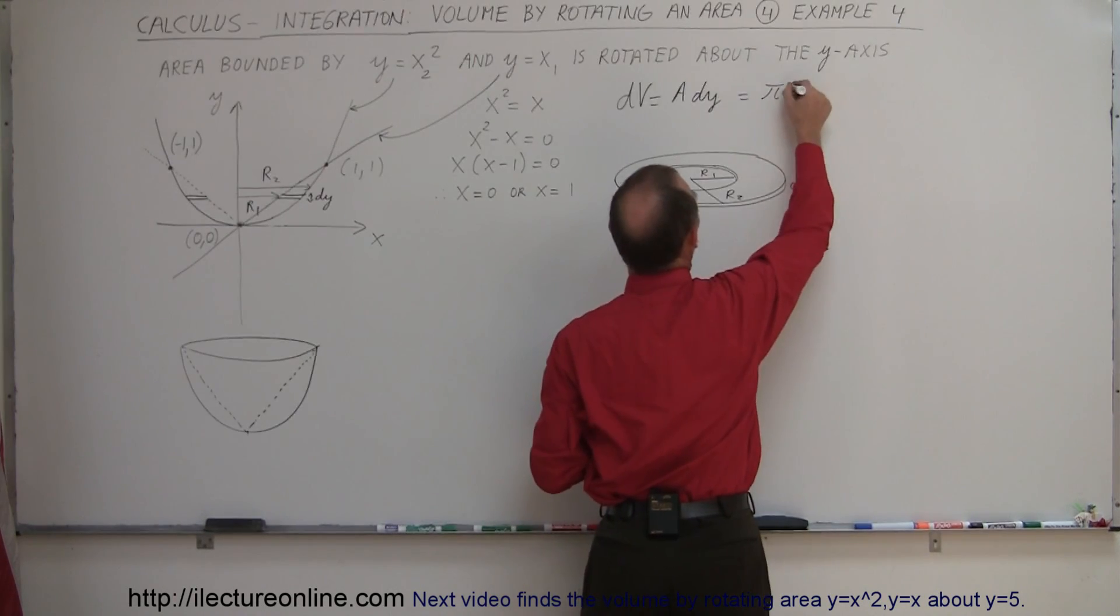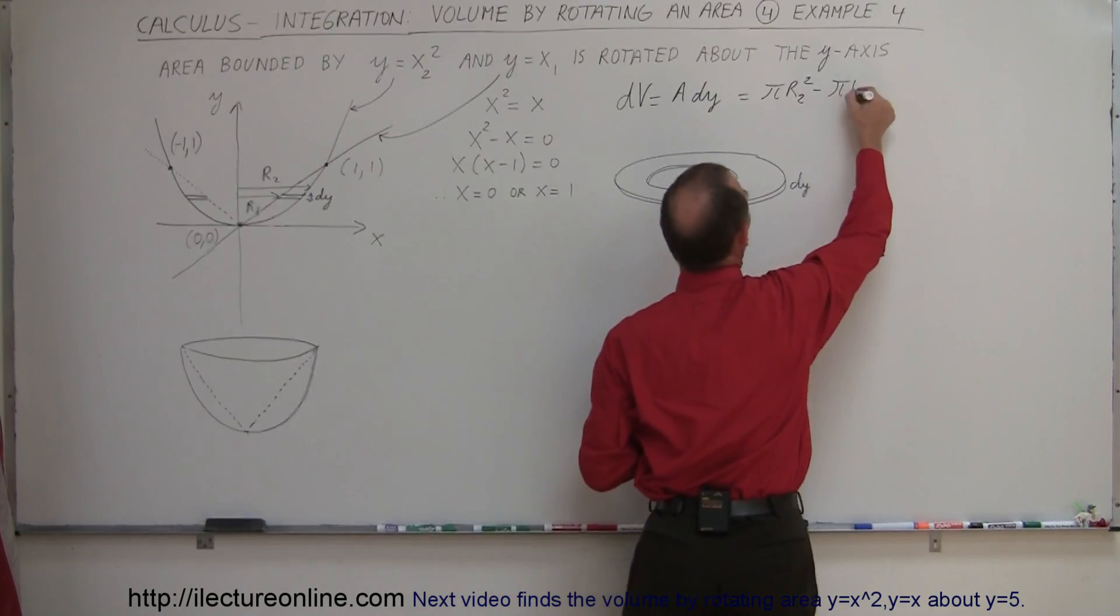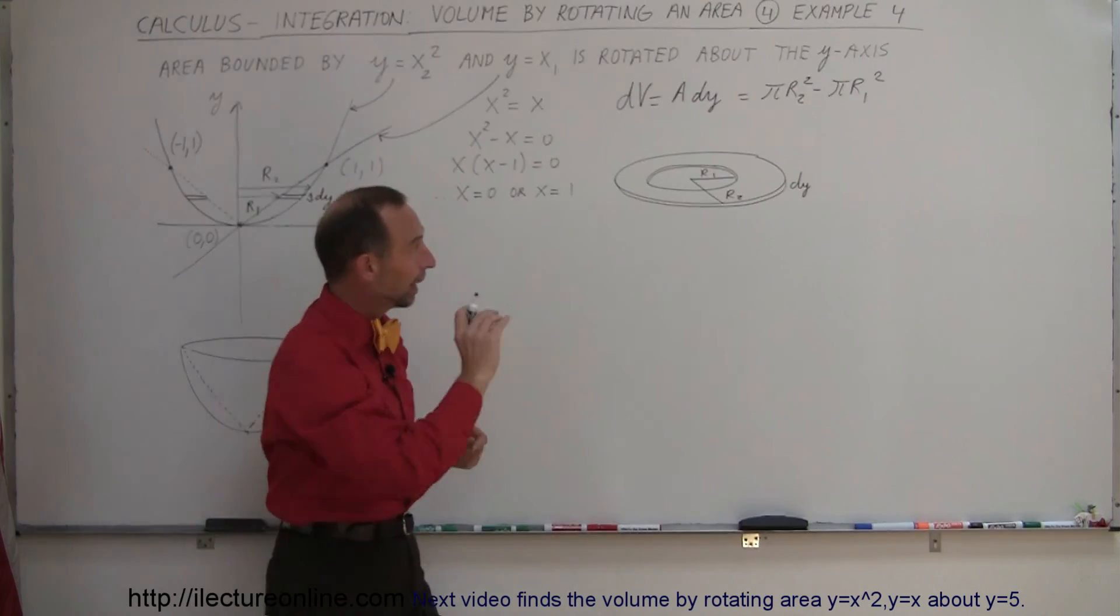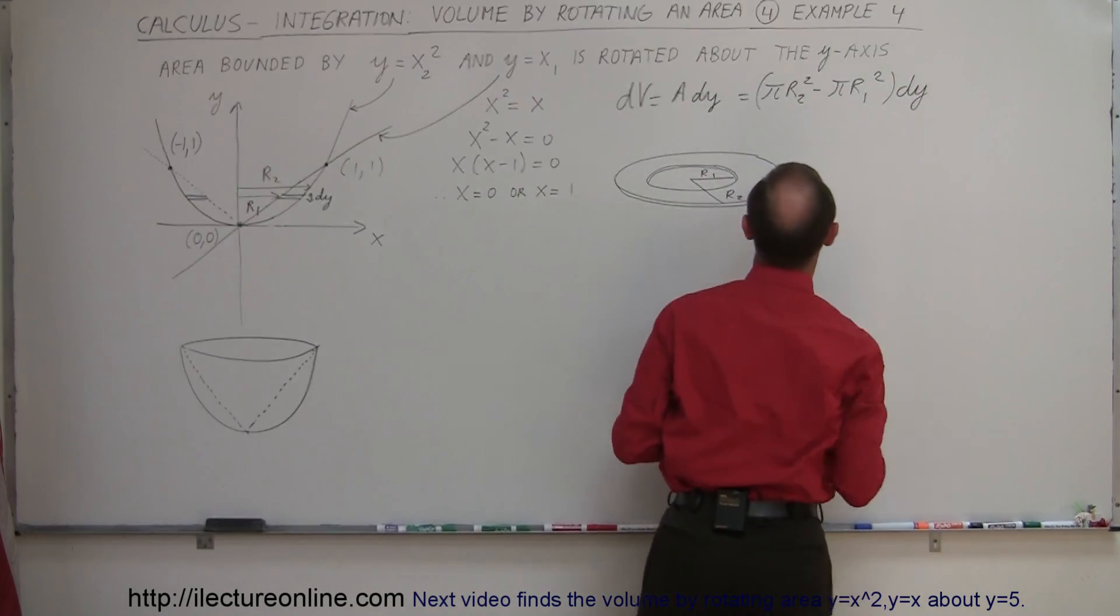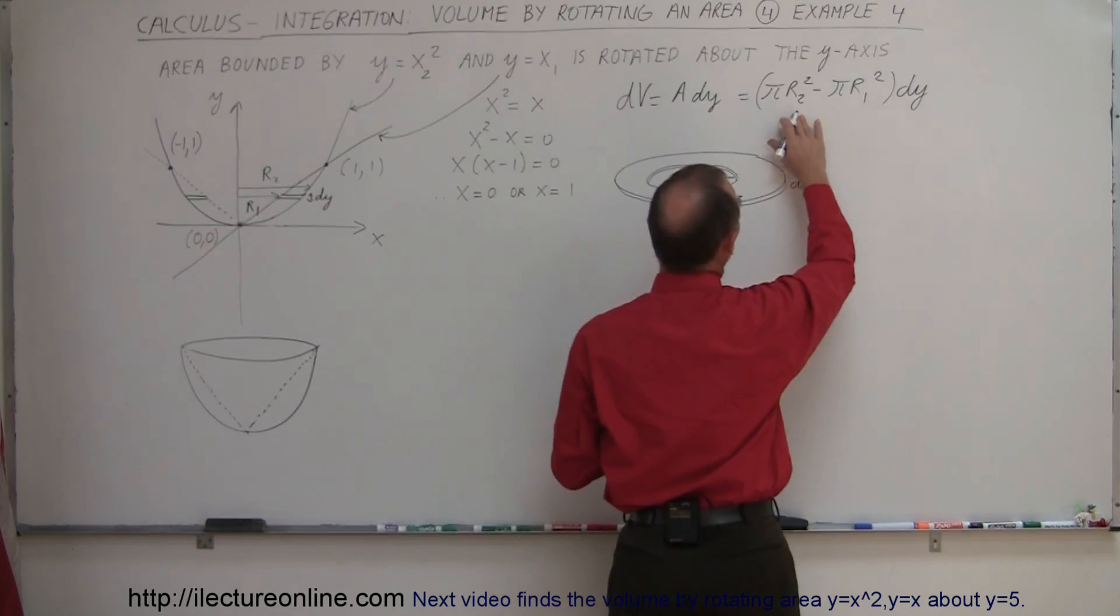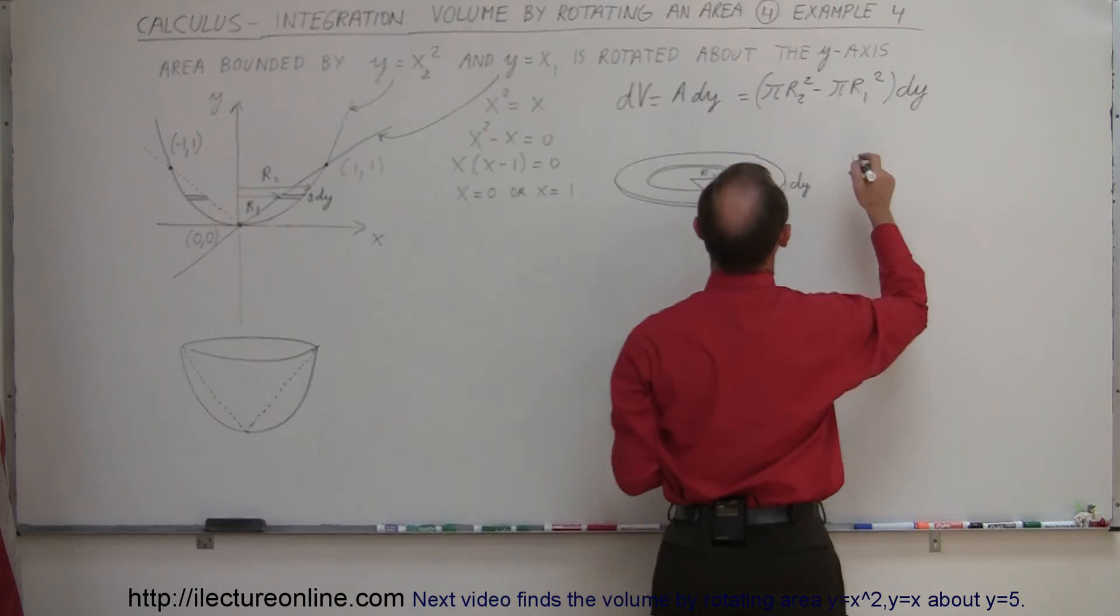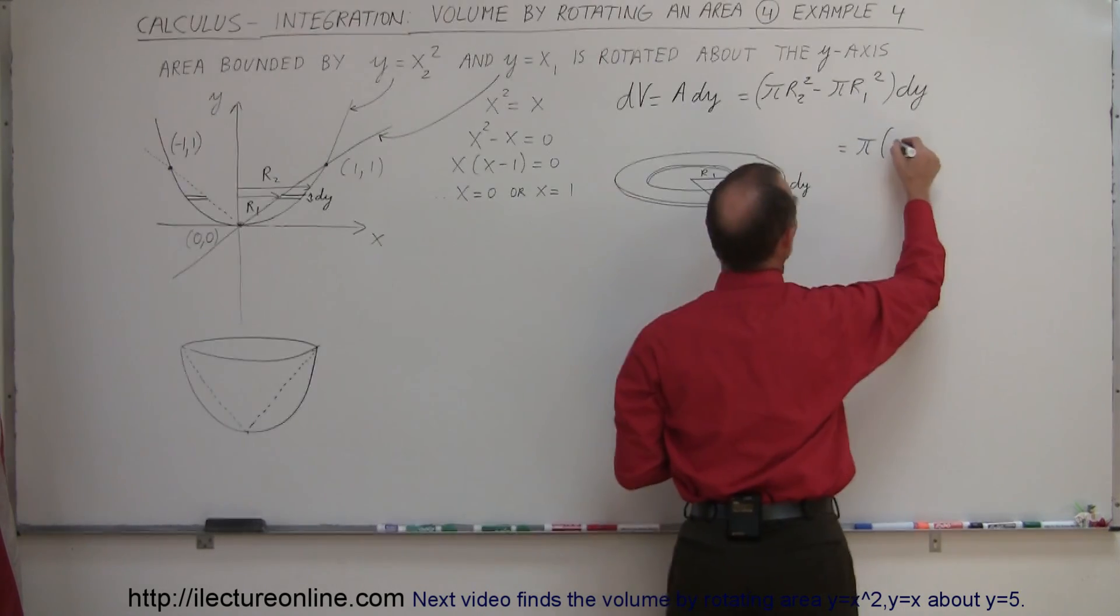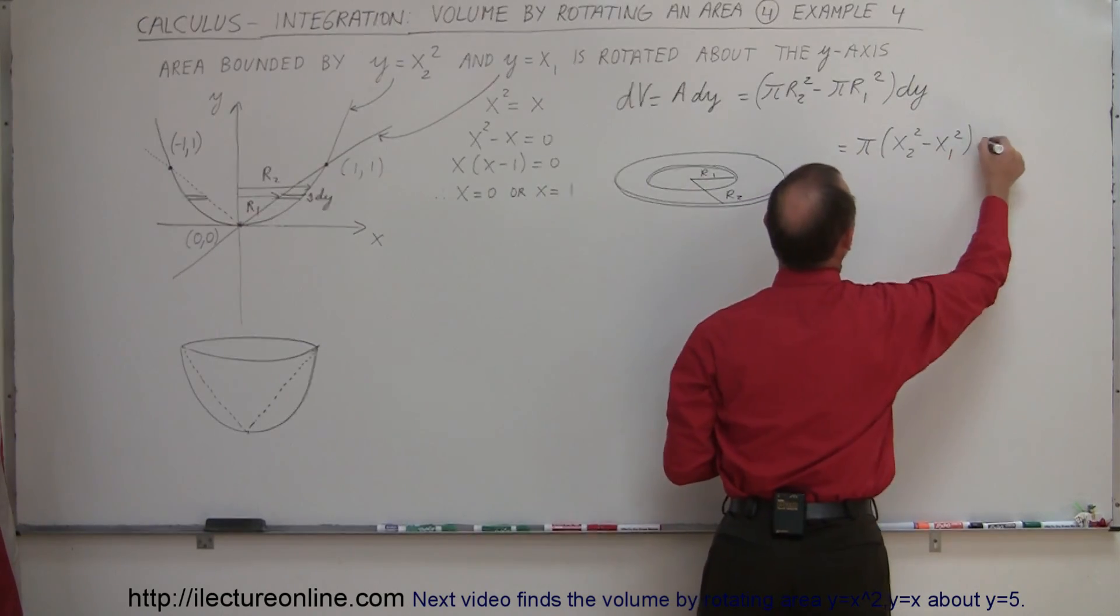And the surface area would be equal to the area of the whole washer, there was no hole in it, so it would be π times r2 squared minus the area of the hole, π r1 squared. So that will give us the surface area of that washer, and then times the thickness will give us the volume dV. And of course instead of using r2 and r1, we're going to use x2 and x1. So this is equal to π, we can factor out a π, that would be x2 squared minus x1 squared times dy.